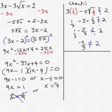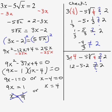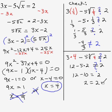That does not automatically mean 4 will work — we must check it. Replace x with 4: 3 times 4 is 12, the square root of 4 is 2, and 5 times 2 is 10. 12 minus 10 is 2, and 2 equals 2. So x equals 4 is my solution to the original equation.